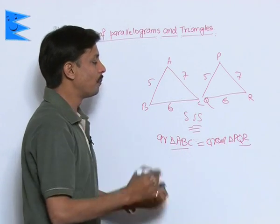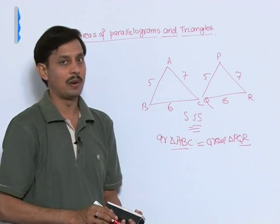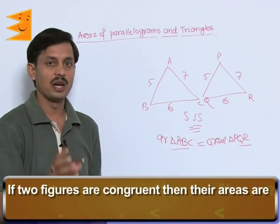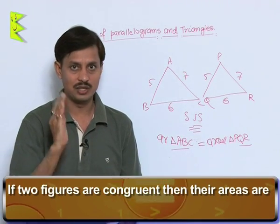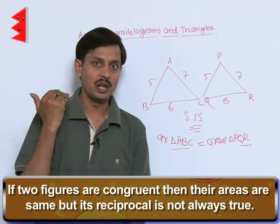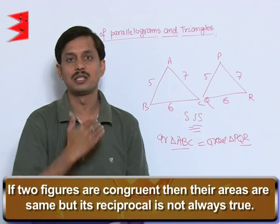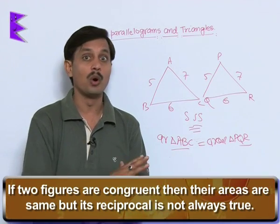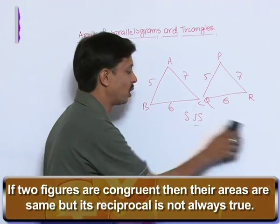So three important conclusions which you have drawn: that if two figures are congruent, their areas are same. But reciprocal of it is not true, that if two objects having the same area, they will be congruent. It is not always true.